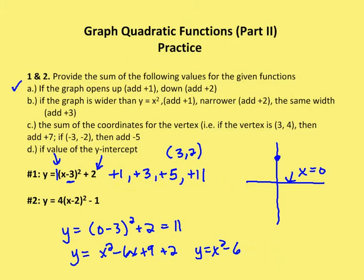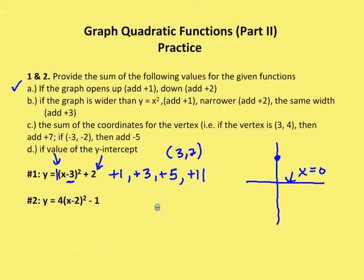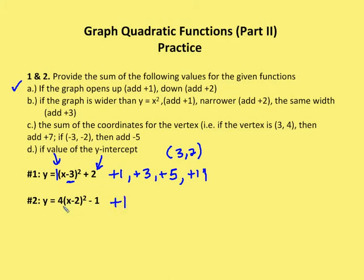Let's tackle the second problem. Also in vertex form, we're going to find out if the graph opens up or down. The a value is four — the absolute value of a is greater than one and it's positive, so the graph opens up. Since the absolute value of a is greater than one, it's going to be a narrower graph, so we add two.